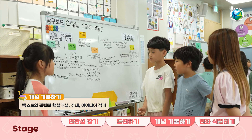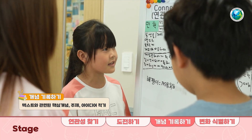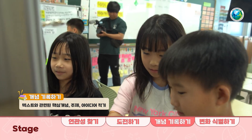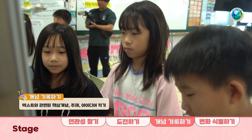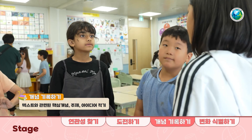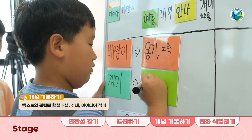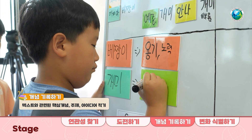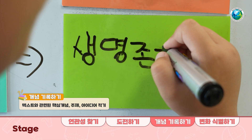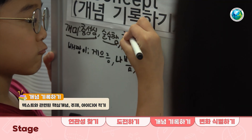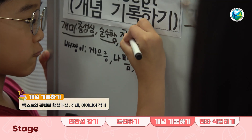개념 기록하기 단계는 앞의 단계 활동을 통해 알 수 있는 개념이 무엇이 있을지를 찾아보는 단계입니다. 이 단계에서 학생들은 텍스트에 있는 보다 상위의 개념을 찾음으로써 분석적인 사고력을 기를 수 있습니다. 예를 들면 개미는 성실, 노력 등과 같은 태도의 개념, 배짱이는 예술, 여유와 같은 문화의 개념을 도출할 수 있습니다.